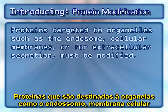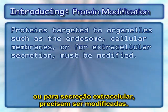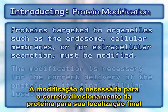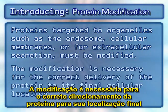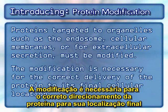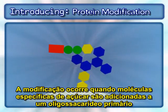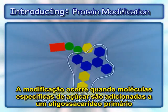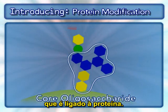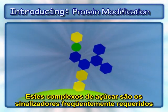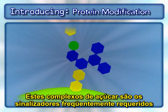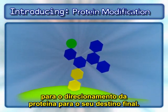Proteins targeted to organelles such as the endosome, cellular membranes, or for extracellular secretion must be modified. The modification is necessary for the correct delivery of the protein to its final cellular location. The modification occurs when specific sugar molecules are added to a core oligosaccharide that is attached to the protein. These sugar complexes are the signal often required to direct the protein to its final destination.